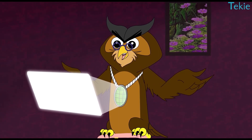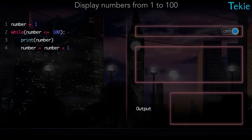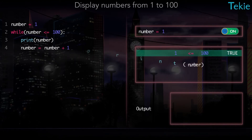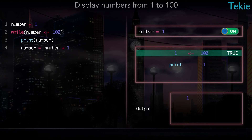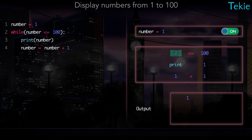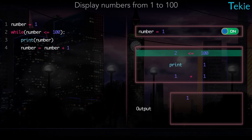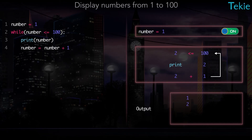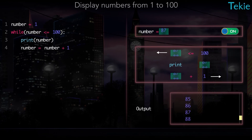We start with number 1. Next, we check if number 1 is less than or equal to 100. Because it's less than 100, we display number 1 as output, and finally we add 1 to 1 — the variable now holds 2. Now we check if number 2 is less than or equal to 100. Again, because it's less than 100, we display number 2 as output, and we add 1 to 2, so the variable now holds 3. This goes on till the number 100 is displayed.